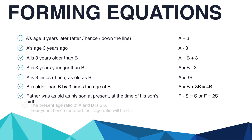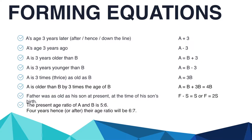The present age ratio of A and B is 5 to 6; 4 years hence their age ratio will be 6 to 7. This can be written as A/B = 5/6 and (A+4)/(B+4) = 6/7.